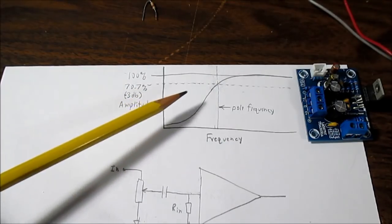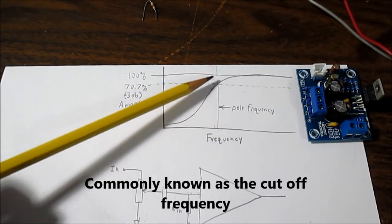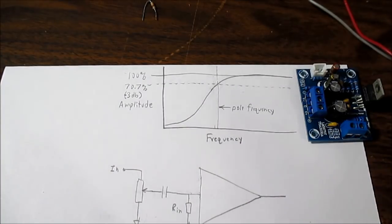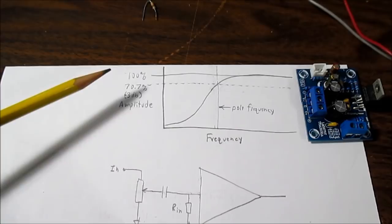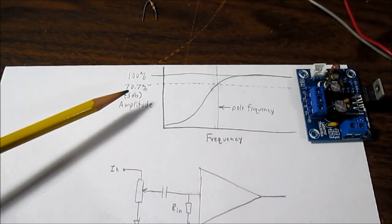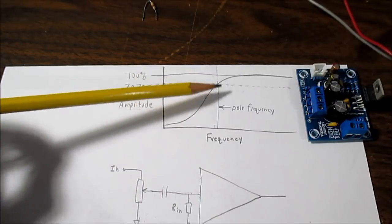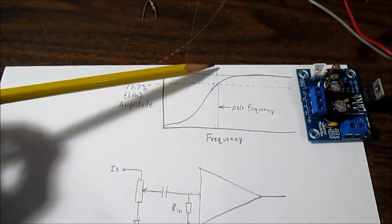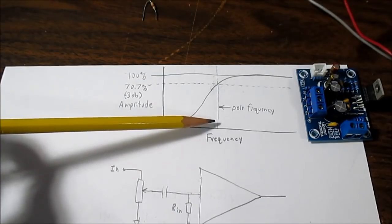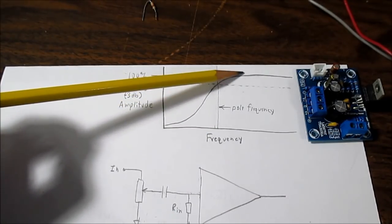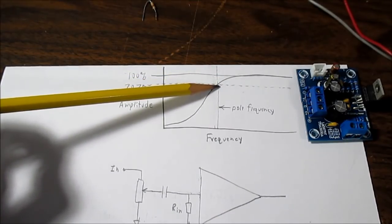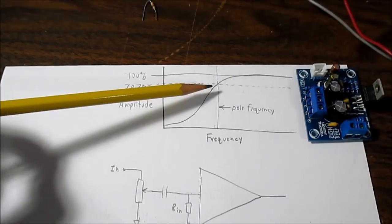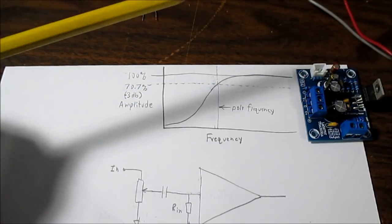So we start here in the pass band. The signal is at a hundred percent and as the signal decreases, again with that capacitor in series with the input, it'll start to roll off and it'll form a curve like this. Now at 70.7% is the pole frequency. And that's what we calculate. It has to do with mathematics. There's pi using the equation and that is a mathematical value that you see often.